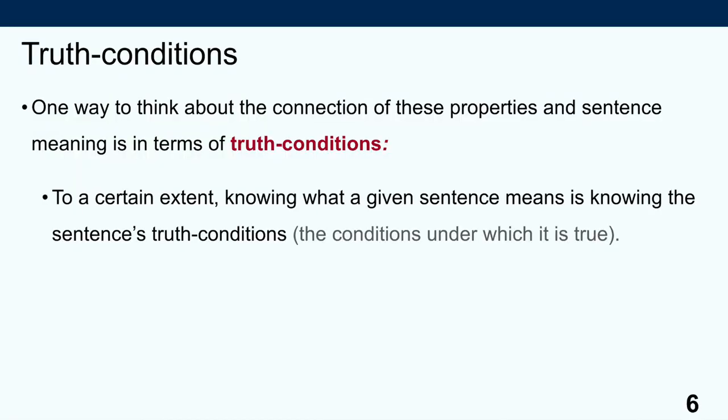One way we can think about the connection between word meaning and sentence relations is in terms of truth conditions. We can say that knowing what a given sentence means is knowing the sentence's truth conditions — the conditions under which that sentence would be true. Crucially, that doesn't mean you have to know whether the sentence is actually true or not. It only means you have to know what the world would have to be like for that sentence to be true.